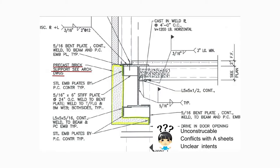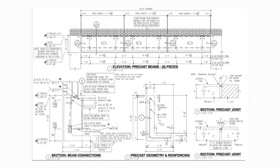Going to the structural drawings — we were already told to see them — it's a brick support. That was important because it tells me the loads include a lot of brick, which is different from other scenarios. On the shop drawing, I decided to make the piece in three parts. Since the contract drawing was ambiguous, I could have just put in false joints — they didn't tell me. It's part of this business: everybody's shifting costs and risks.